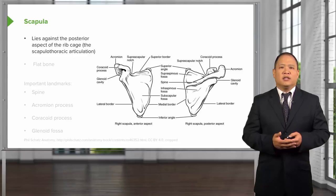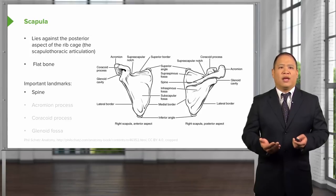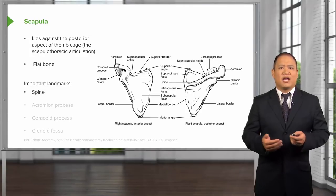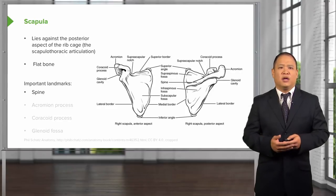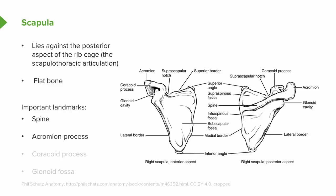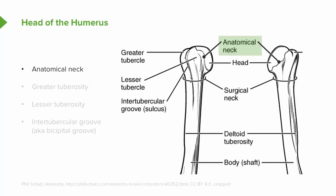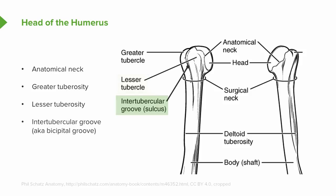The scapula is located posteriorly along the thoracic cage. It is a flat bone with key important landmarks: the spine of the scapula posteriorly where many muscles attach, the acromion process as the most distal portion of the scapular spine, the coracoid process that juts anteriorly where the pectoralis muscles attach, and the glenoid fossa where the humerus articulates. The humerus has an anatomical neck, a greater tuberosity, a lesser tuberosity, and a groove where the biceps tendon runs through.